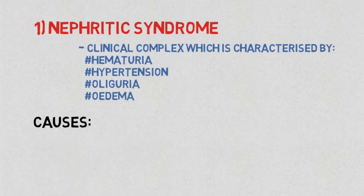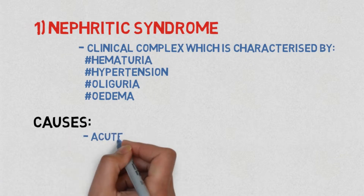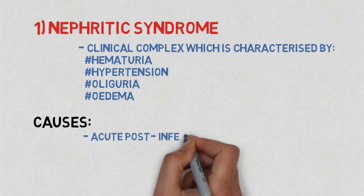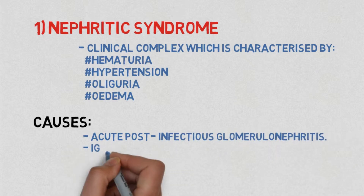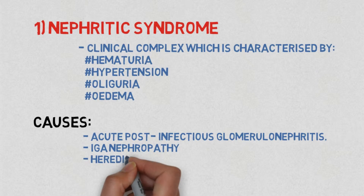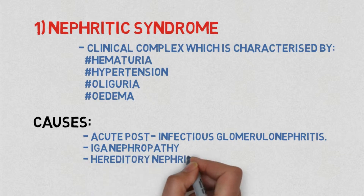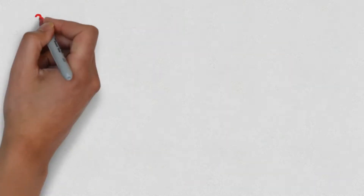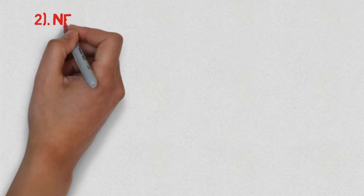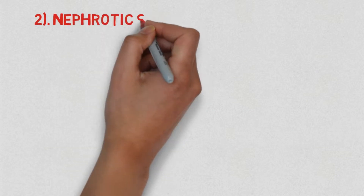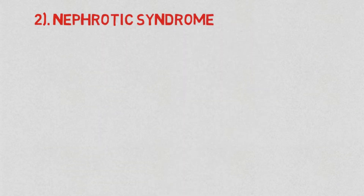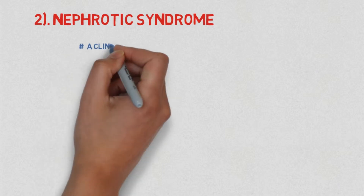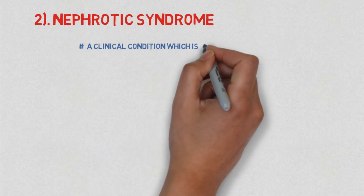The common causes of nephritic syndrome are acute post-infectious glomerulonephritis, IgA nephropathy, and hereditary nephritis. Next, nephrotic syndrome. Nephrotic syndrome is a clinical condition characterized by massive proteinuria, hypoalbuminemia, generalized edema or anasarca, and hyperlipidemia and lipiduria.